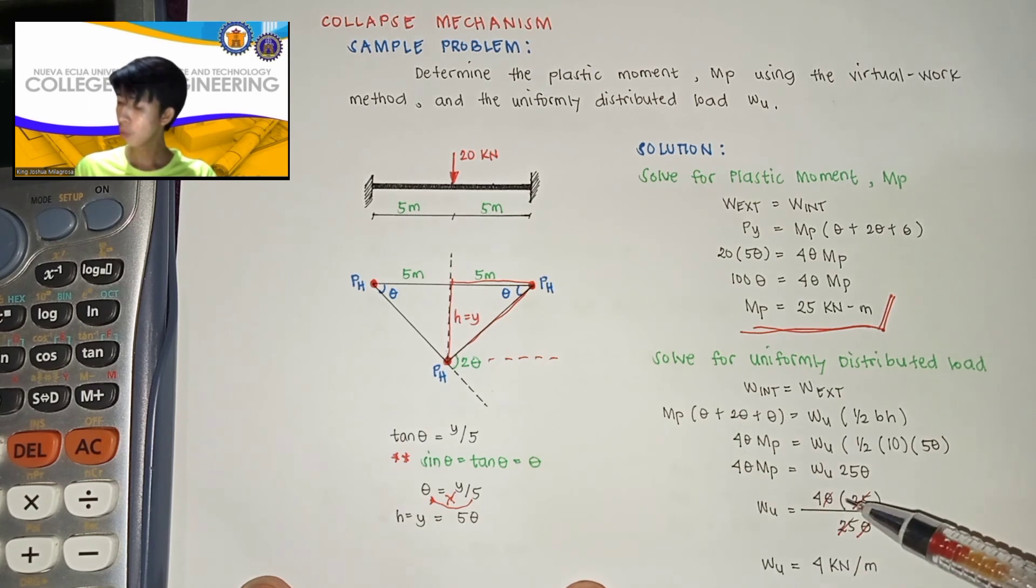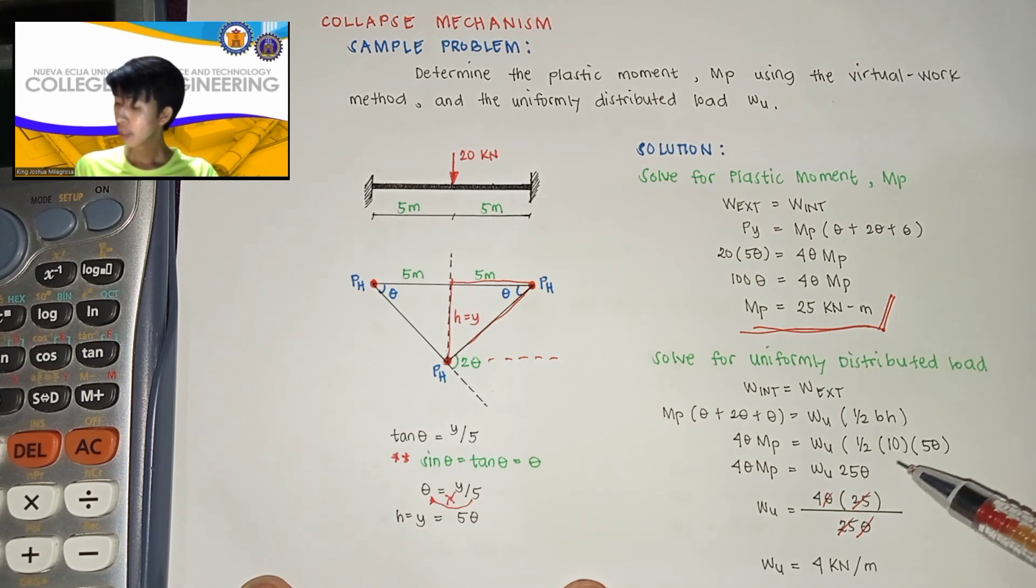so 4 theta MP is equal to w theta, so 1 half times 10 times 5 is equal yan sa 25 theta.